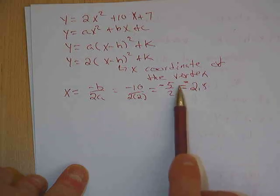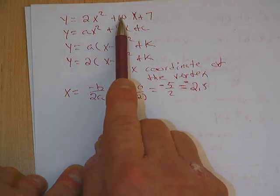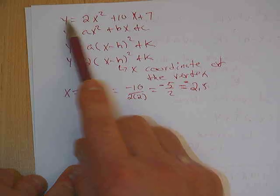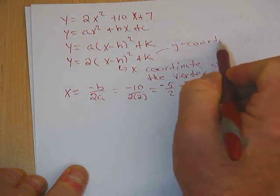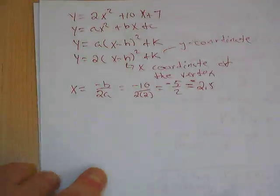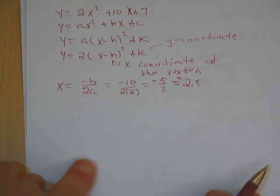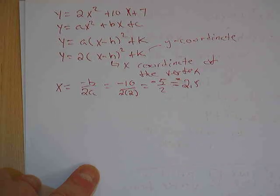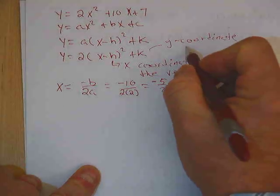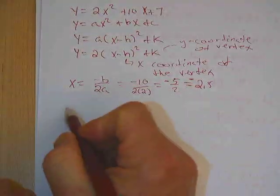And if you remember from the homework, we then took this value of x, plugged it into our equation to get the y coordinate, which is what k is. k is the y coordinate of the vertex. So it was important to do the homework because we're going to be doing it over again and applying it to further problem solving.